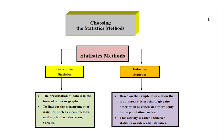From the survey results you can create tables and charts. For example, from the charts and tables it says that 80 people say yes, they like studying in Universitas PGRI Semarang, and the other 20 students say they don't like it. This is the process of descriptive statistics.